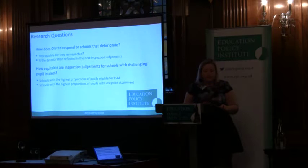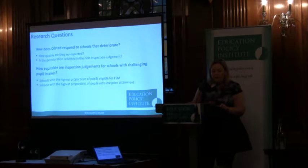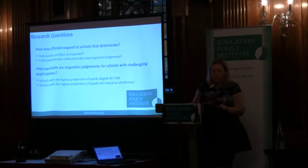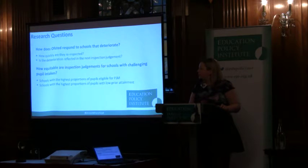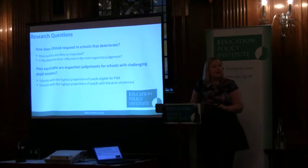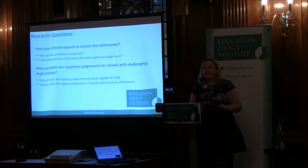We set ourselves two questions. The first was how does Ofsted respond when schools deteriorate? The second was about how equitable inspection judgments are for schools with different pupil intakes. On the first question, we looked at how quickly schools are re-inspected if their performance deteriorates, and when re-inspected, how deterioration is reflected in the resulting judgment. On the second question, we looked at the proportions of pupils eligible for free school meals and pupils with low prior attainment — those in the bottom quarter nationally when they entered the school.